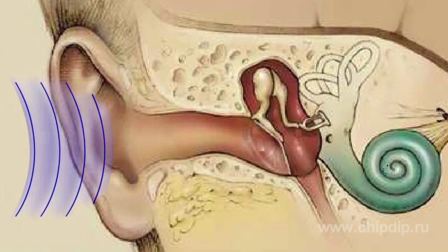The oscillatory air particles transfer their energy to our eardrum, which also starts oscillating with practically similar amplitudes. However, these ultramicroscopic amplitudes are enough to cause a certain irritation of the acoustic nerve. As a result, we can hear a sound.